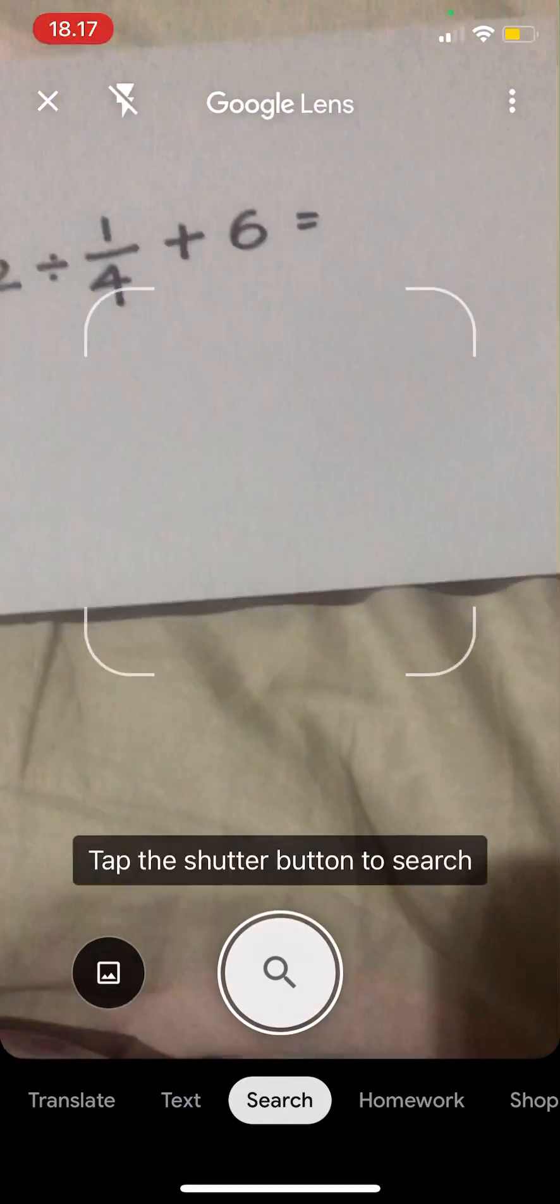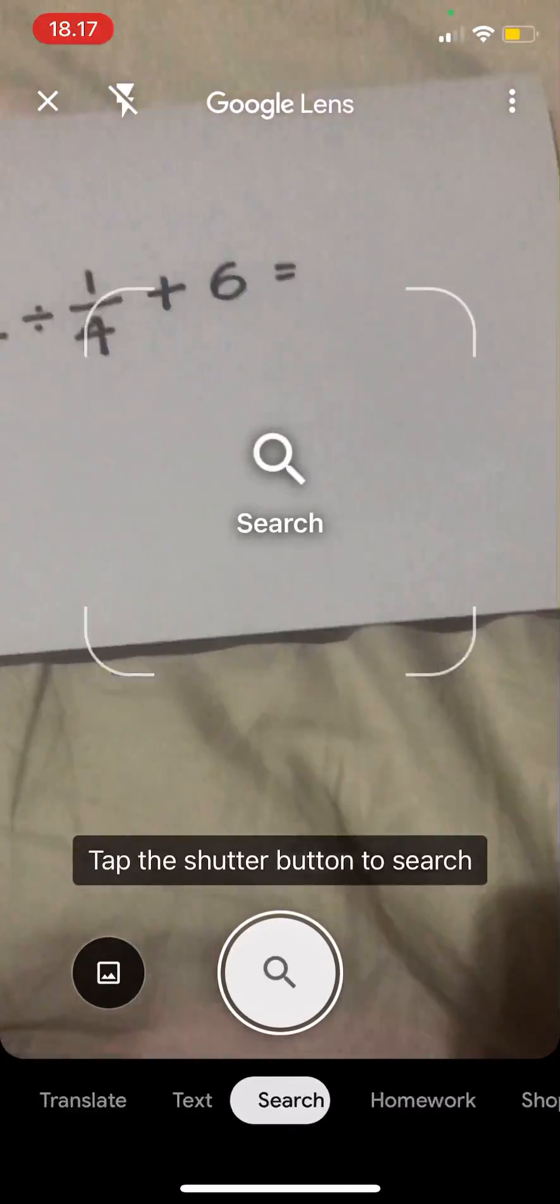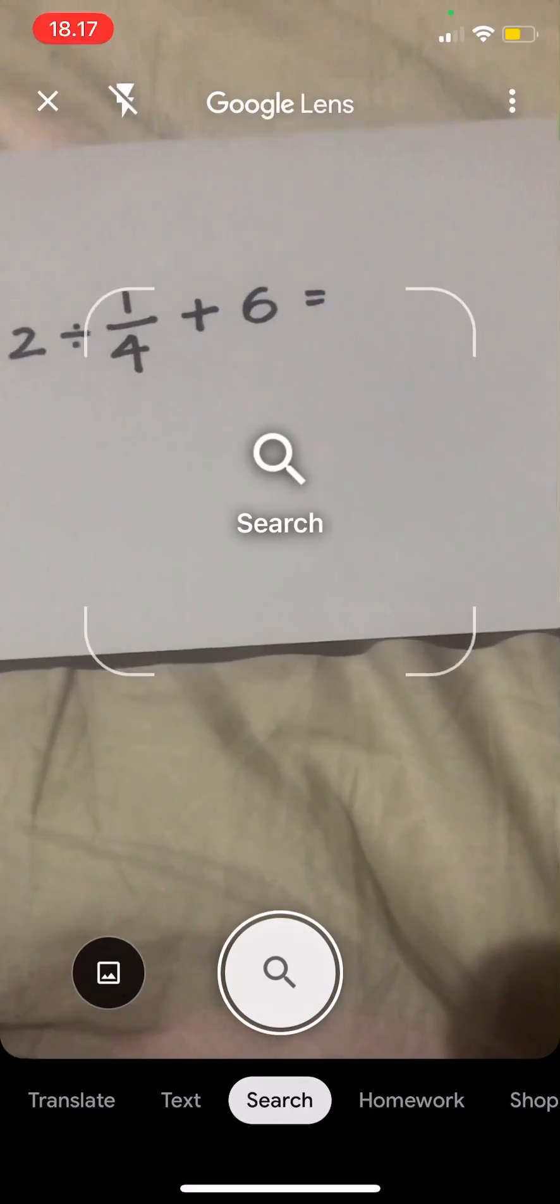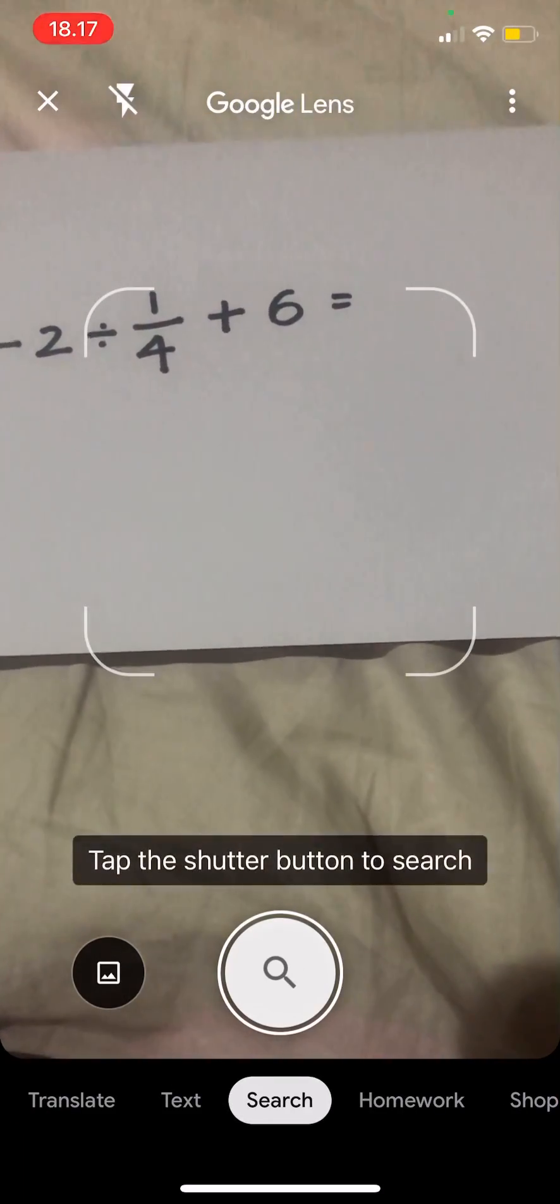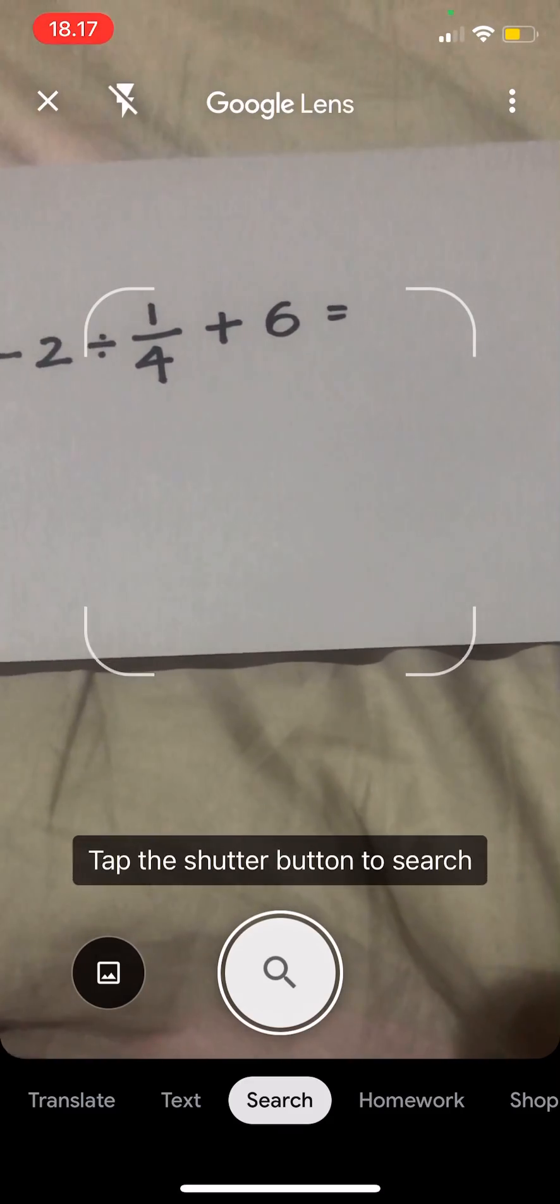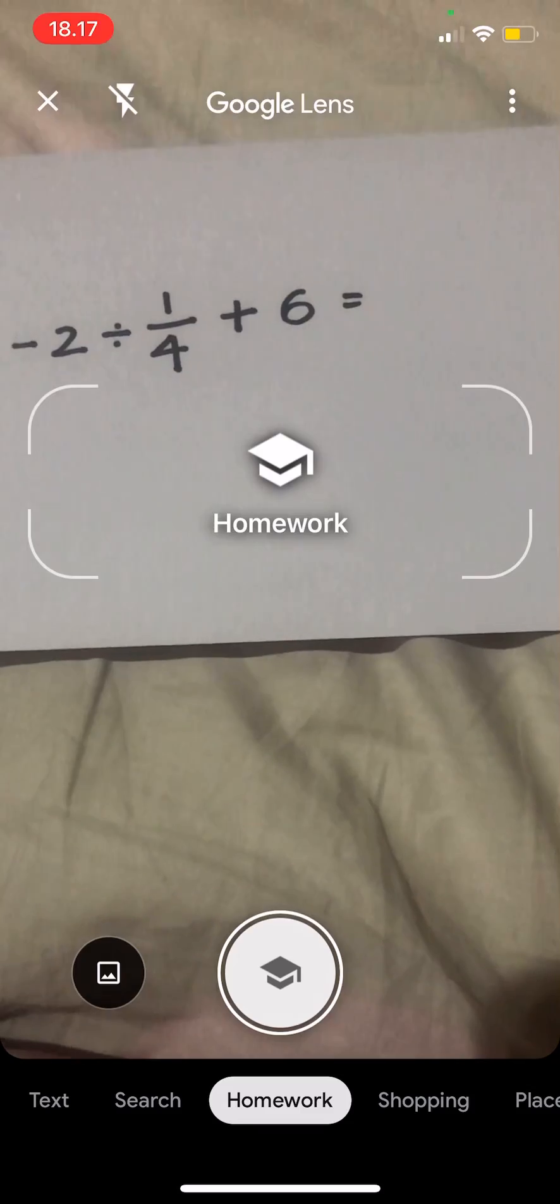But you're just going to go and press the homework tab right here. If it is not there, I waited around like a few minutes and played around a lot with Google Lens and then it will show up.